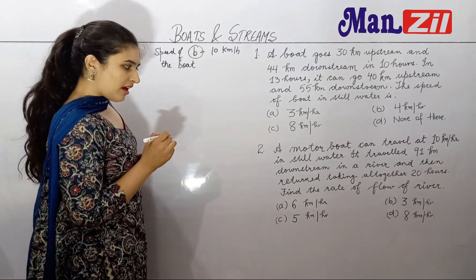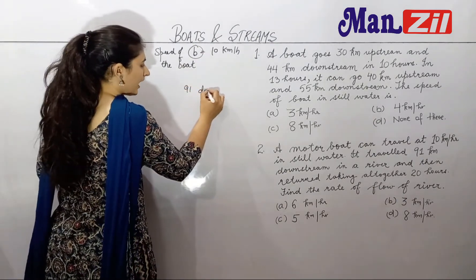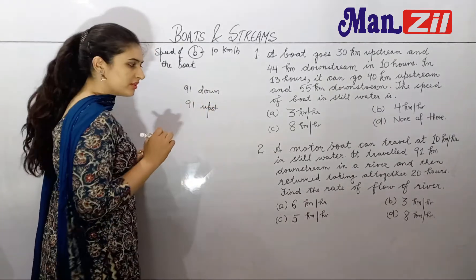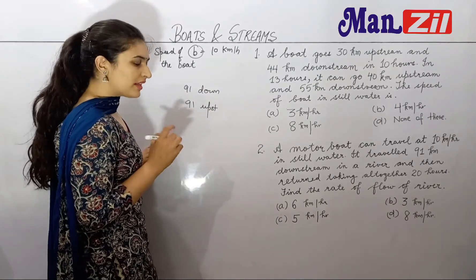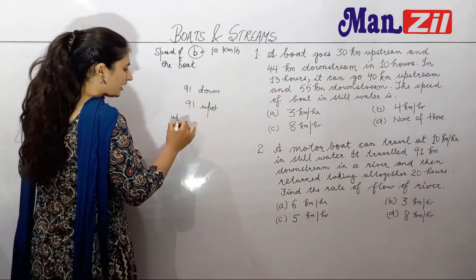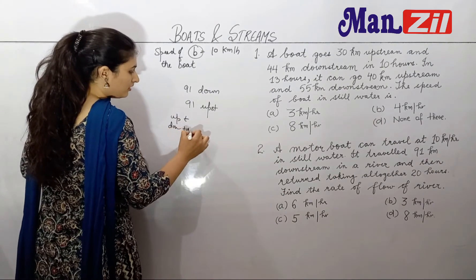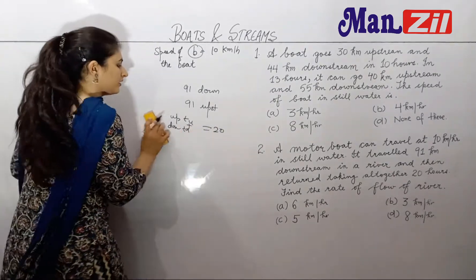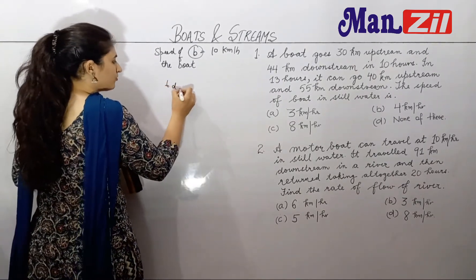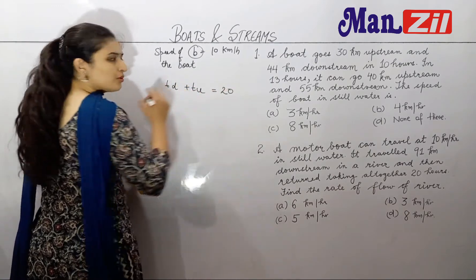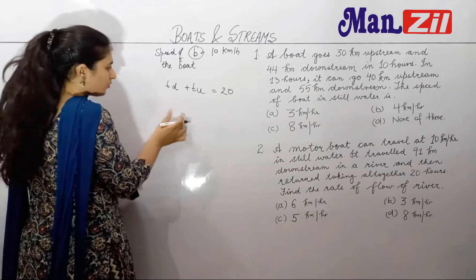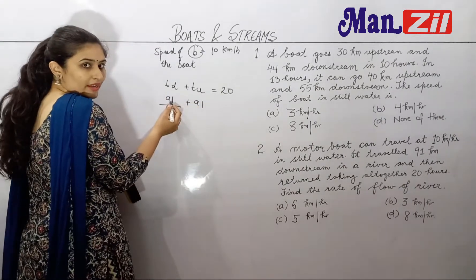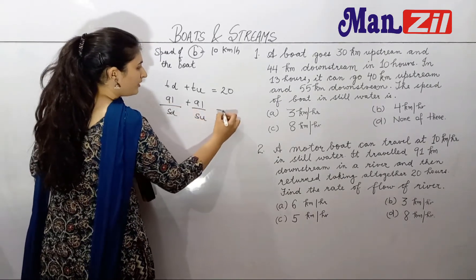The boat travelled 91 km downstream and returned back — so 91 km upstream as well. Its total time is 20 hours. Time of downstream plus time of upstream is equal to 20 hours. Time is distance upon speed, and the distance is 91 in both cases. Speed of downstream plus speed of upstream equals 20 hours total.